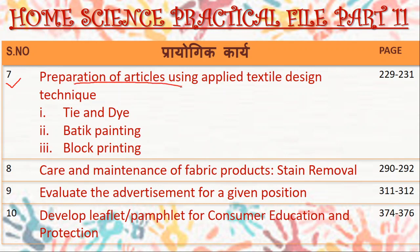Practical number seven is regarding the preparation of articles using applied textile design techniques. We will be dealing with three techniques: tie and dye, batik, and block printing. It's not necessary to make samples of all three or to make an article — you can make samples for all three techniques or, as per the instructions of your teacher, you can use only one technique. For this session at least, I think you can go with only one sample using any one of these techniques.